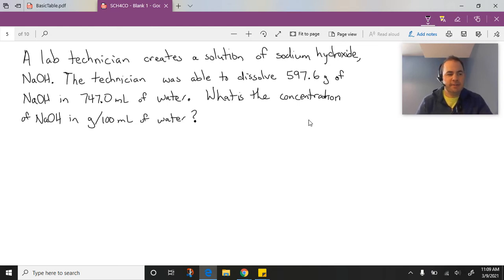I'm going to approach it by just setting up a ratio of our known information to what we want to find. So to set up our ratio, we know that we can dissolve 597.6 grams in 747.0 mils. So when I set up my ratio, I want to figure out what mass can be found in 100 mils of water.